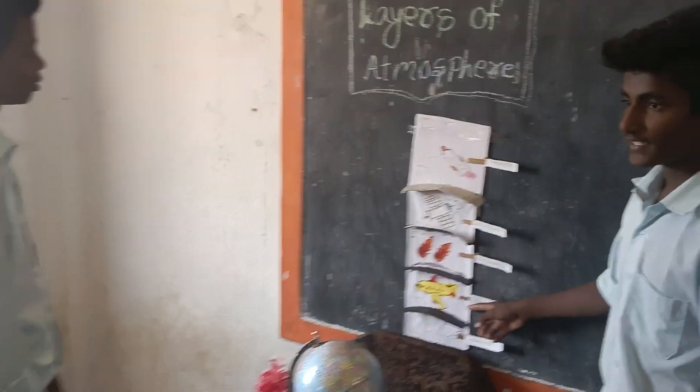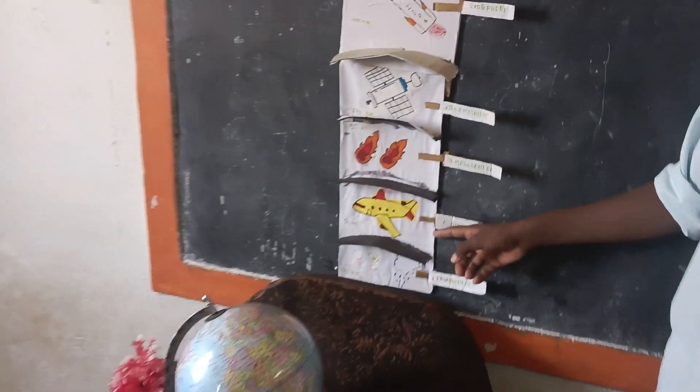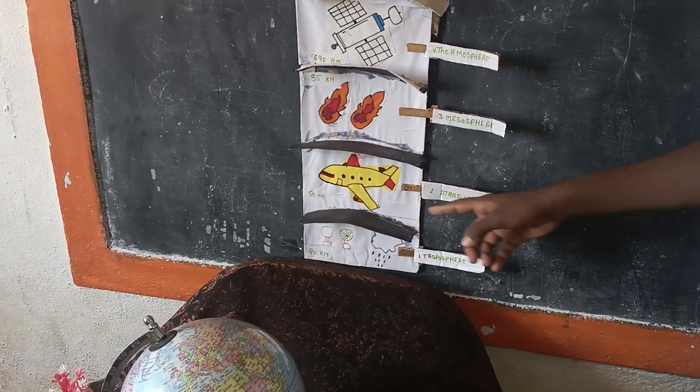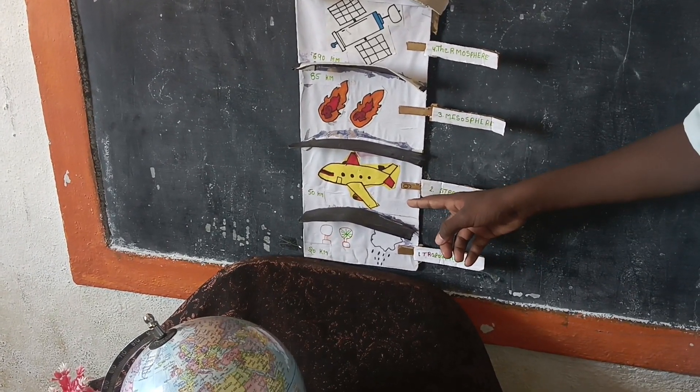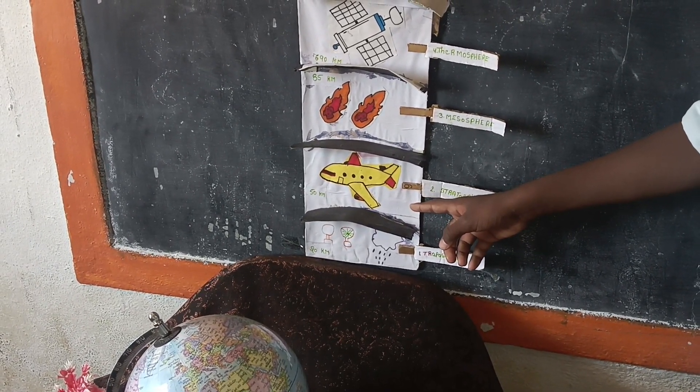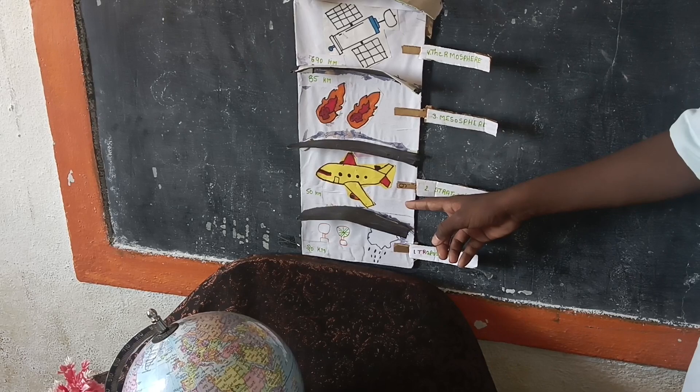Up to 50 km surroundings of the earth is called stratosphere. This layer is suitable for flying aircrafts and aeroplanes. It has ozone layer.